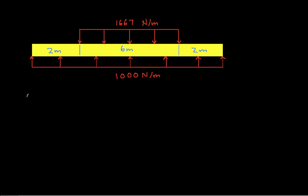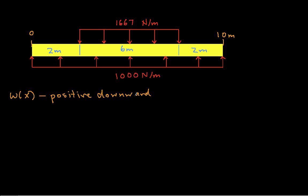To do that, we will introduce what's called a weight density, which we'll call w(x). This basically shows the load on the beam as a function of x, where x starts at 0 and goes out to 10 meters. The important thing to understand is that w(x) is positive downward — unlike the usual convention where upward is positive. This is because w(x) generally represents a load such as gravity, and it typically makes sense to think of it as positive downward.